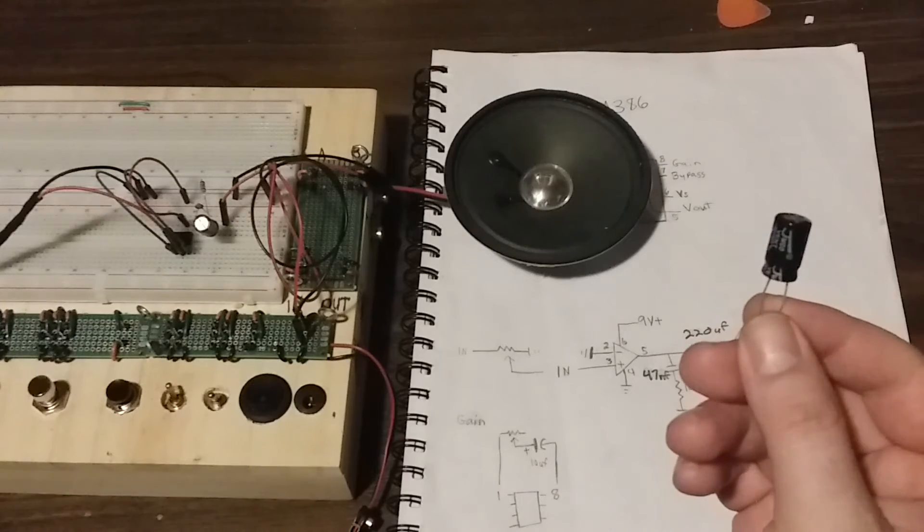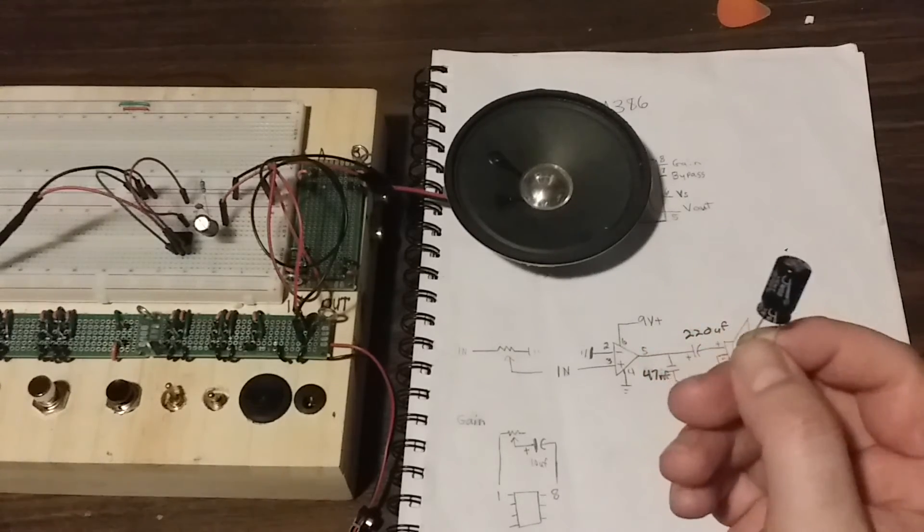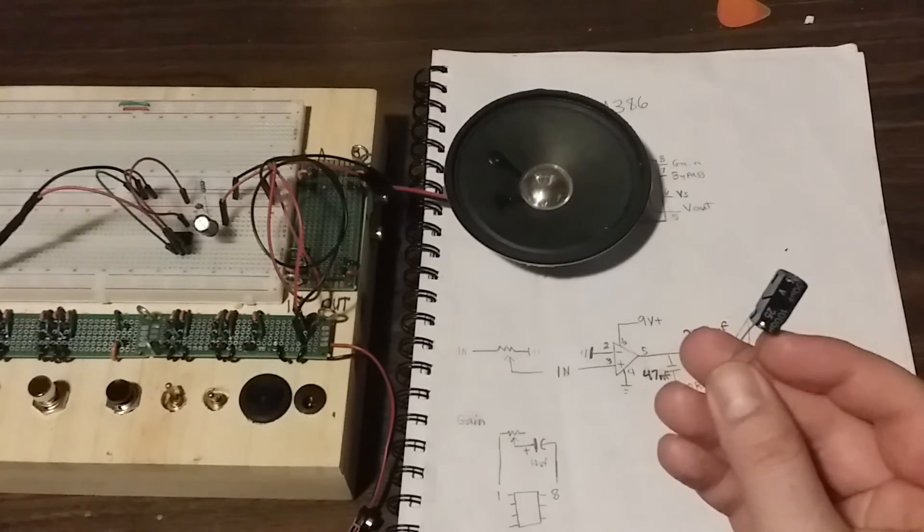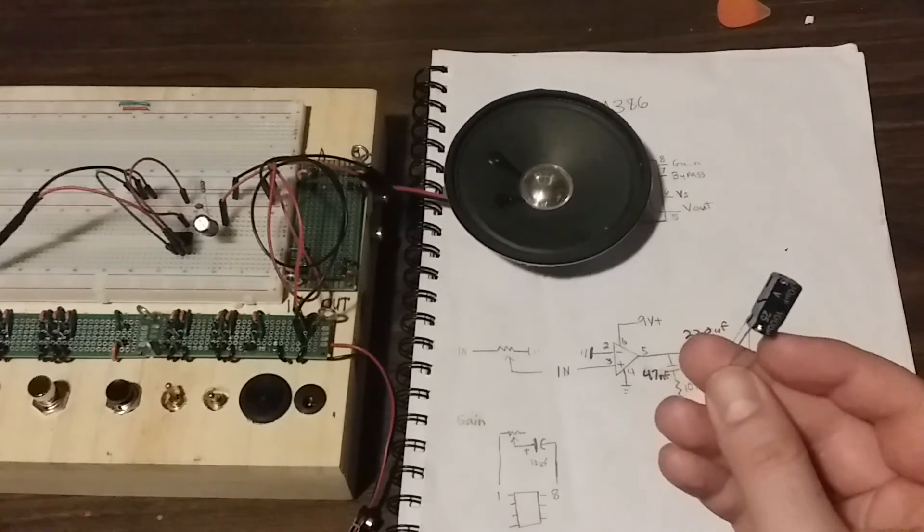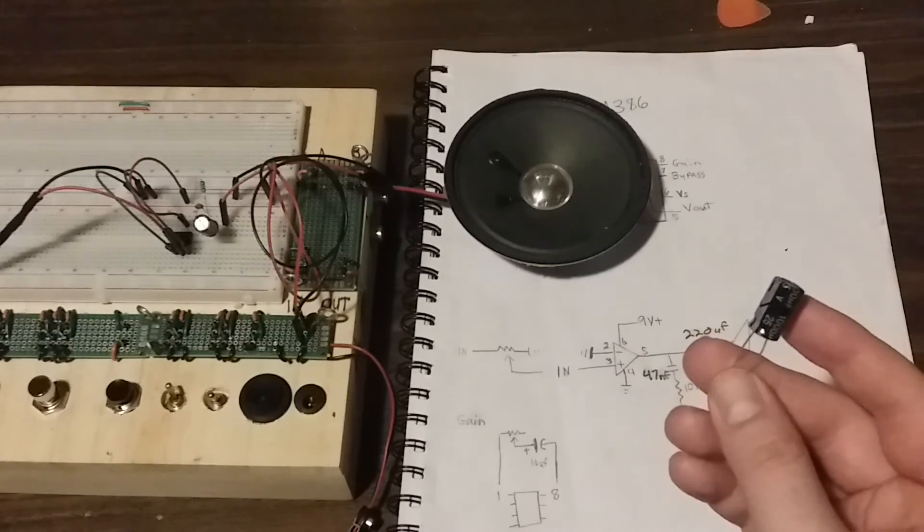This is where the 1000 UF capacitor comes into play. If I were using a 9 volt battery, I may not need this. But because I'm using a power supply, sometimes power supplies are noisy.